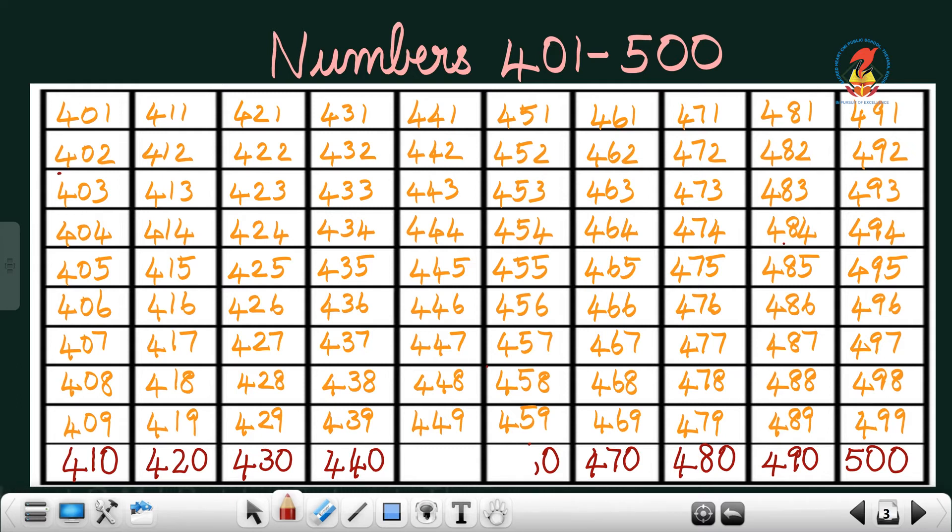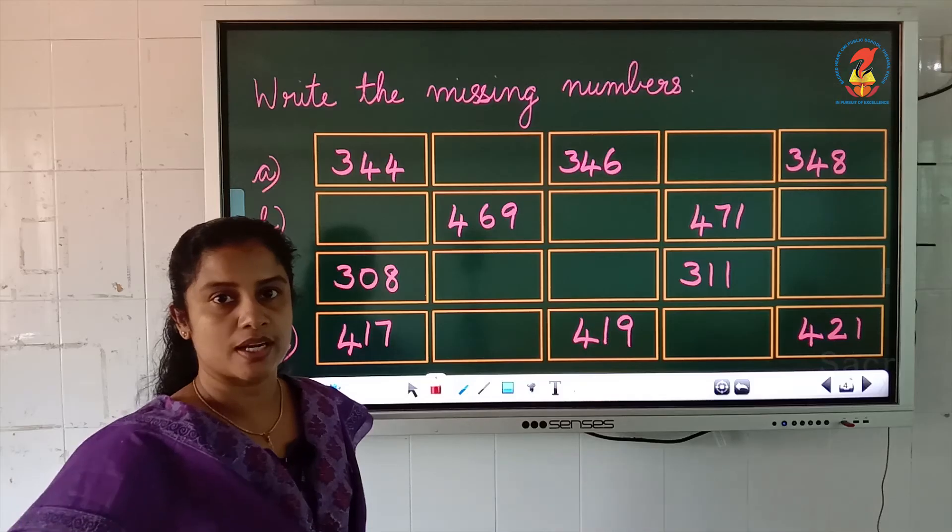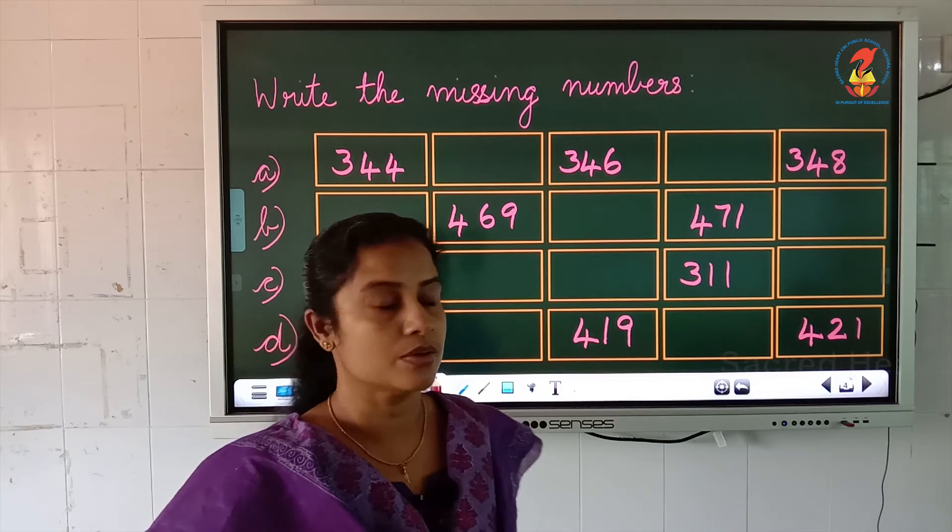I hope all of you understood. Children, you have to practice this at home. Now we will do an exercise. Look into the board. What is the question written on the board? Write the missing numbers. You have to write the missing numbers.